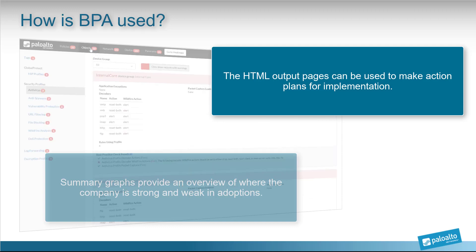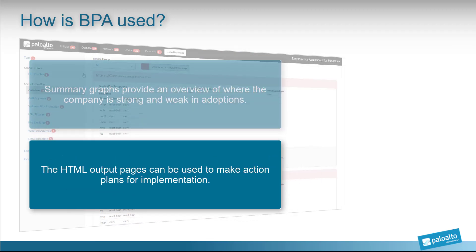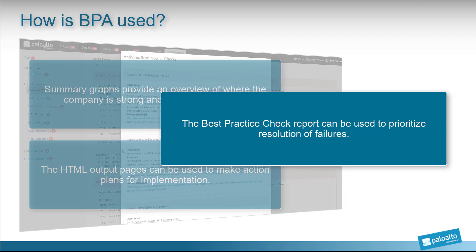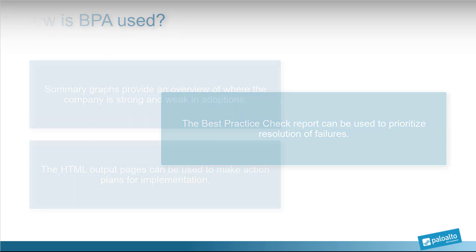The details from the HTML output pages can be used to make action plans for implementation. The failed best practice check spreadsheet that comes with the report generation gives a list of checks that failed. This list can be used to prioritize which check results should be resolved now and which ones to resolve later.